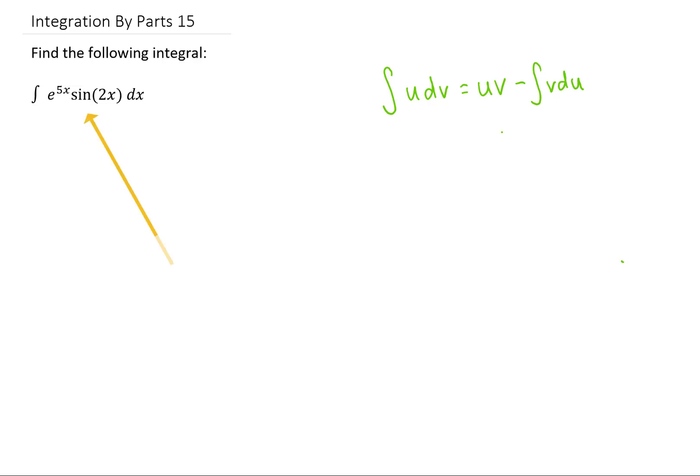So, as always, we look at this integral, we see a product of two functions, and that indicates that we should probably be using integration by parts. From that integrand, we need to choose a u and a dv. Now, between e to the 5x and sine of 2x, neither function is going to simplify if we differentiate it, and neither function is going to simplify if we integrate it. So, it actually doesn't matter what we choose for our u and our dv. I will choose u is e to the 5x, and dv is sine of 2x dx.